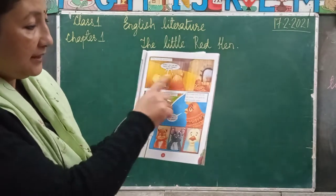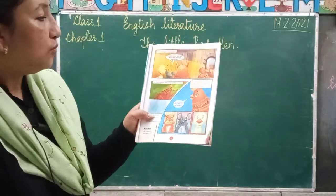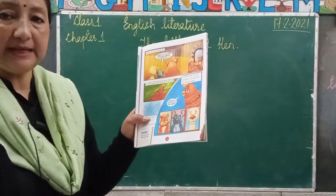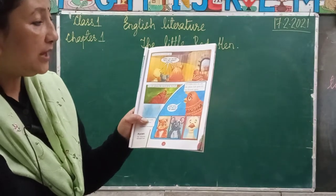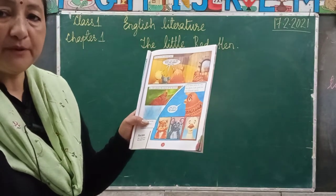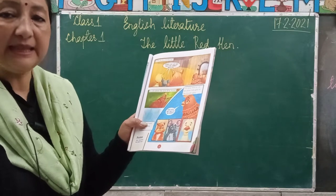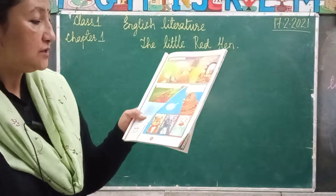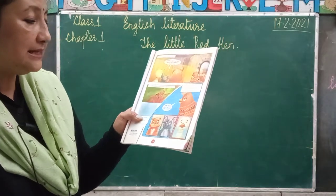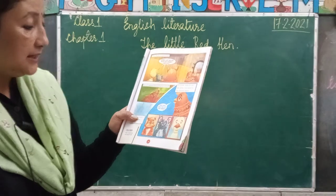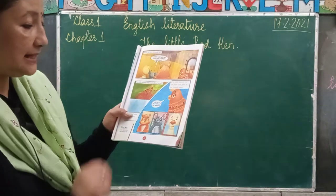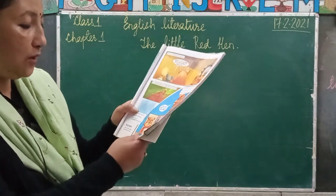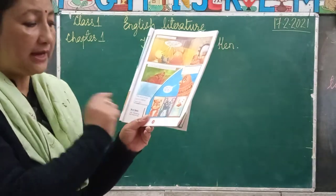Her friends seem to be very, very busy. They say: sorry Lily, we are so busy that we cannot help you. So Lily plants the seed all by herself. She goes to the garden and she plants the seed there. The seed soon grows yellow and ripe. After she plants it, it grows yellow and ripe.